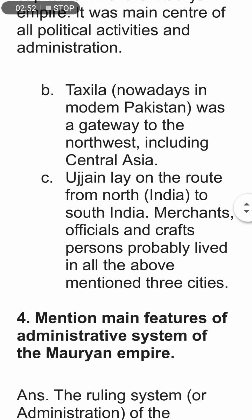Taxila is now located in modern-day Pakistan. Taxila was a gateway to the northwest, including Central Asia. Ujjain lay on the route from north India to south India. Merchants, officials, and craftspersons probably lived in these three cities.